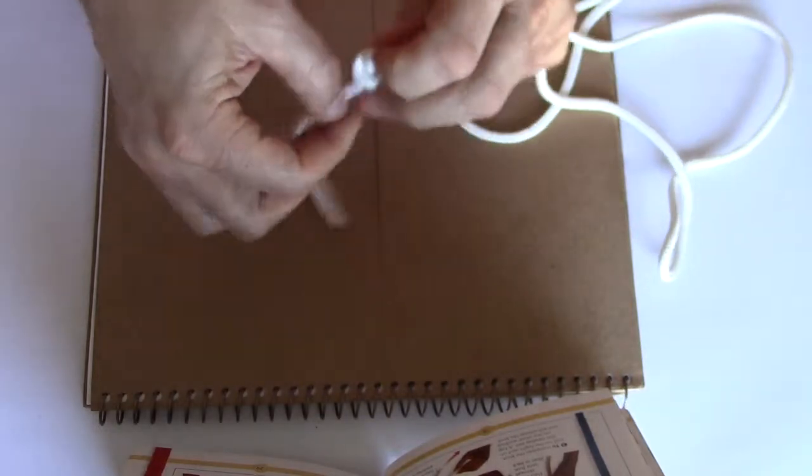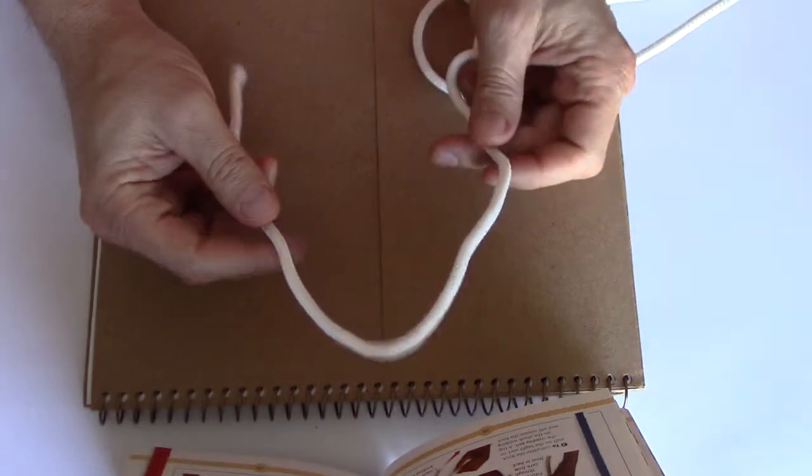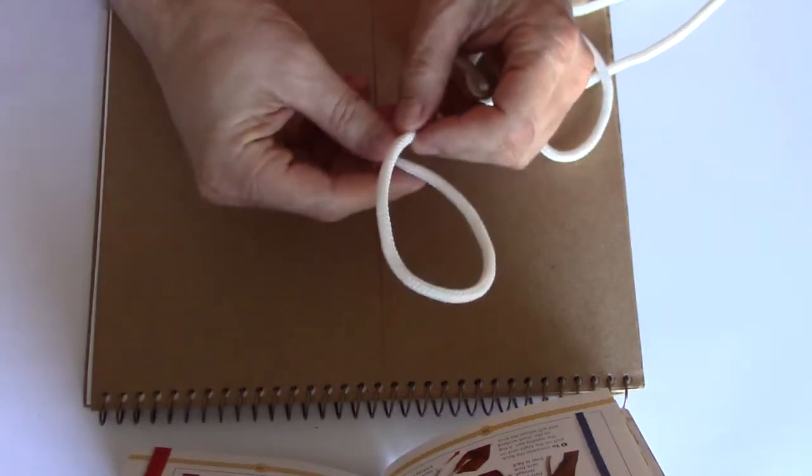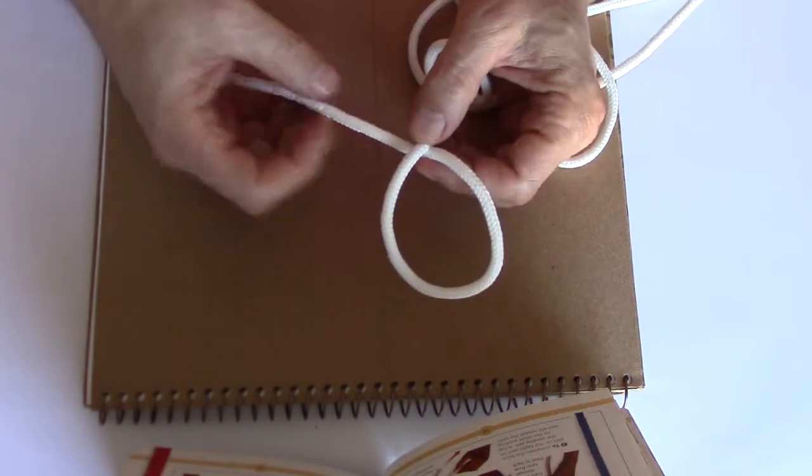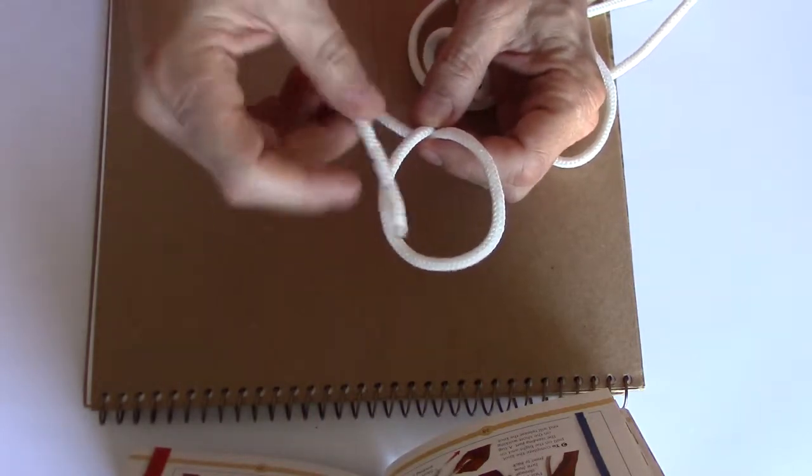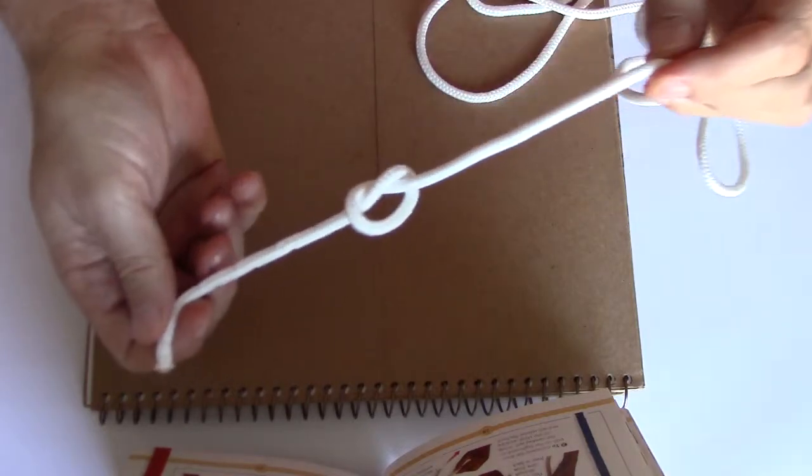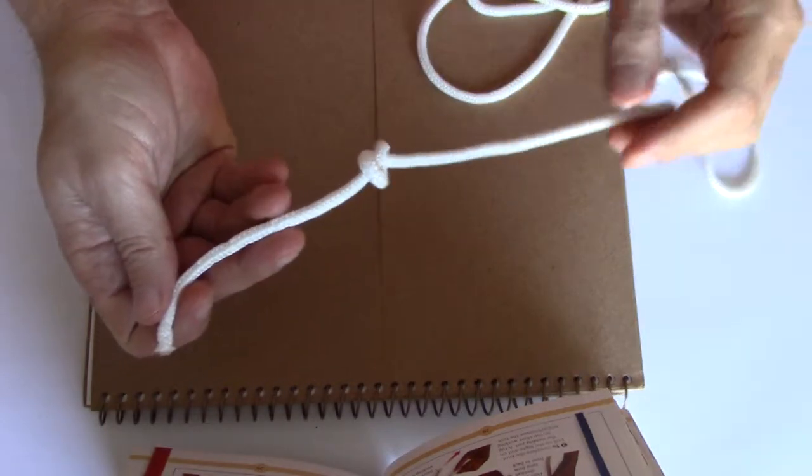I'll do that one more time. Have the working end in your right hand and the rest of the rope in your left hand. Make a loop with the working end being underneath the longer end and put the working end through the top of the hole and pull it tight. And that's your basic overhand knot.